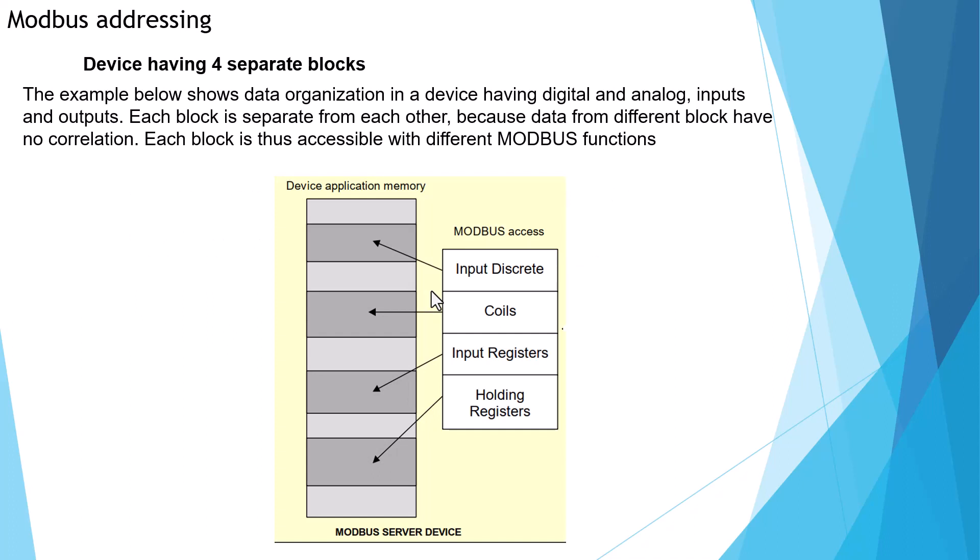There are things about Modbus address you should know. Modbus is a block. If you use Modbus, you should know it has four separate blocks: the input discrete block, the output discrete block, the input register block (analog input), and the holding register block (analog output). These four blocks are separate — they are not correlated. Each block is accessible with a different Modbus function.